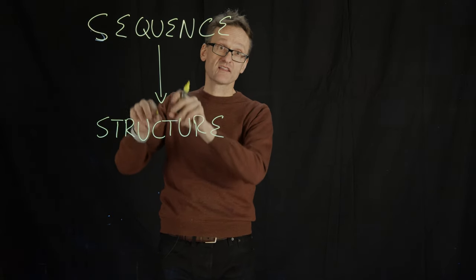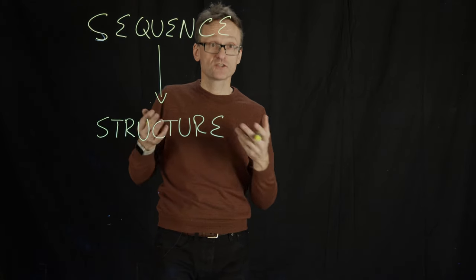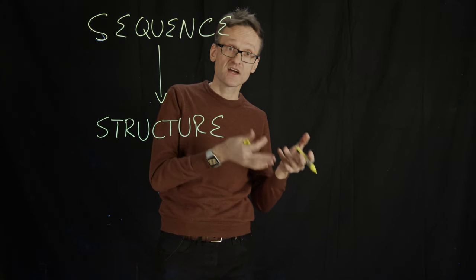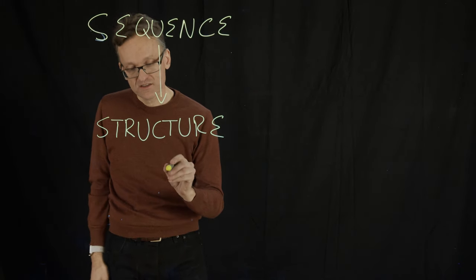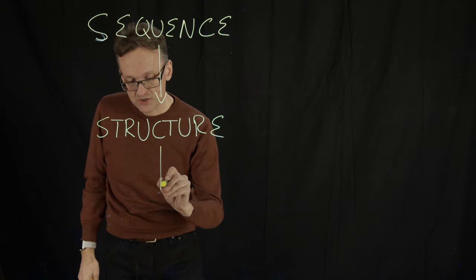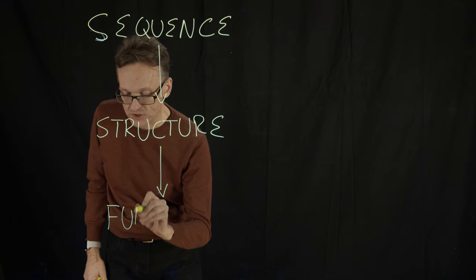We have information in the sequence that is communicated so that we're creating information in terms of a structure, such as a specific protein, say a spike protein or hemoglobin. The information in the structure is also mediated in terms of achieving a special function.